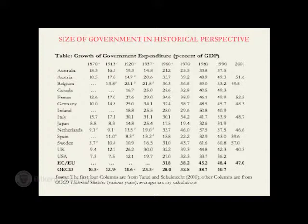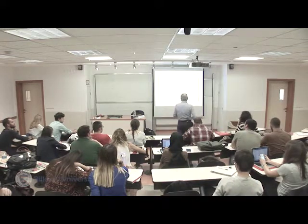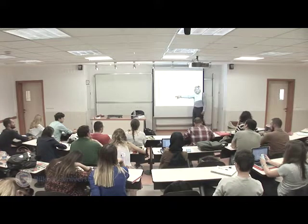World War I — right before World War I, the British state spends less than 13% of all goods and services produced in Britain in that year. But at the end of World War I, with all this collectivization, nationalization, and war effort, the British state starts spending on goods and services by more than a quarter. More than a quarter of all goods and services produced in the British economy is purchased by the government. There is a phenomenal rise in the size of the British government.